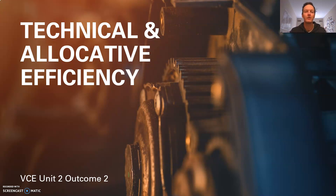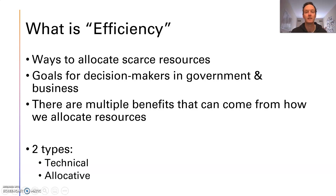Hey legends, welcome to the next video on technical and allocative efficiency. This is a pretty important concept which we will extend upon when we go into next year's learning, but we're just going to start with two types of efficiency in economics. So what is efficiency? This word efficiency all relates to the way that we allocate scarce resources. It enables us to look at different goals for decision makers in government and business on how we allocate our resources with different goals in mind.